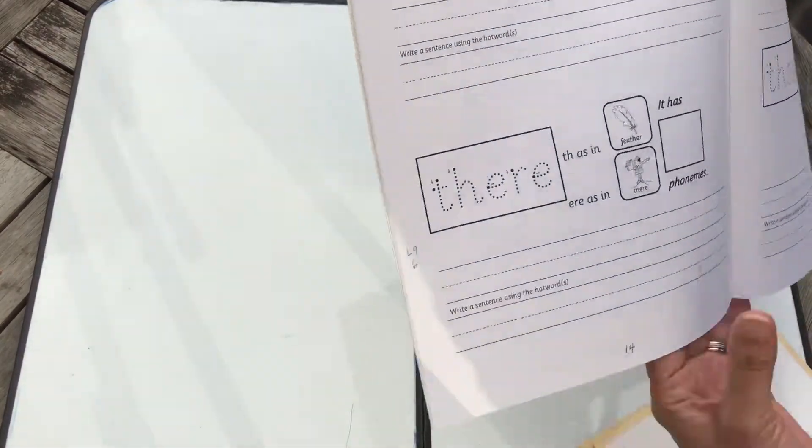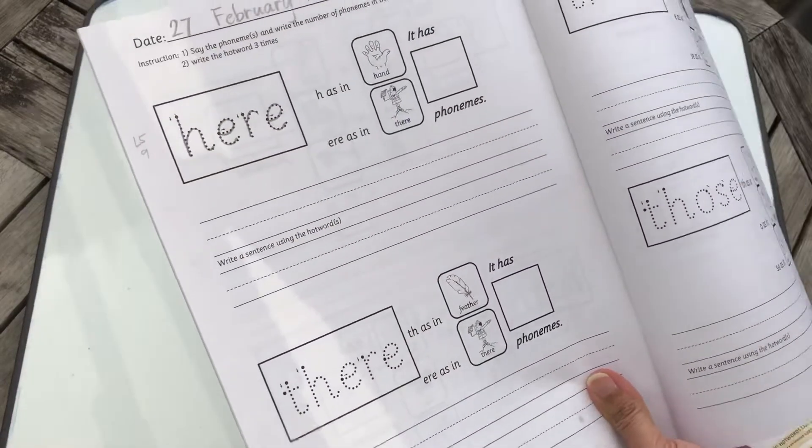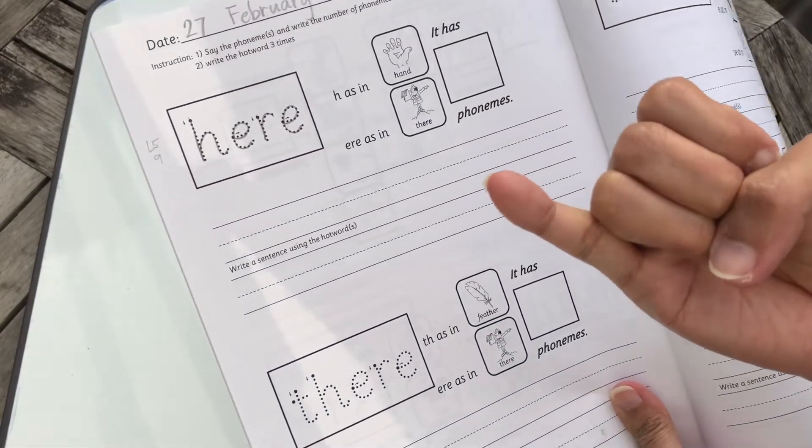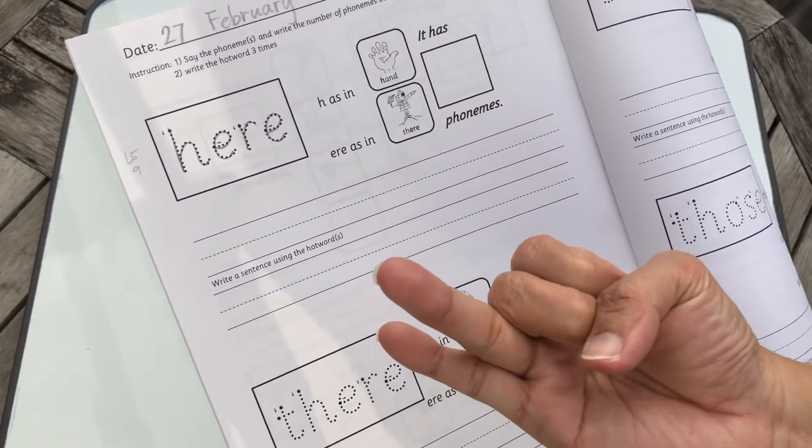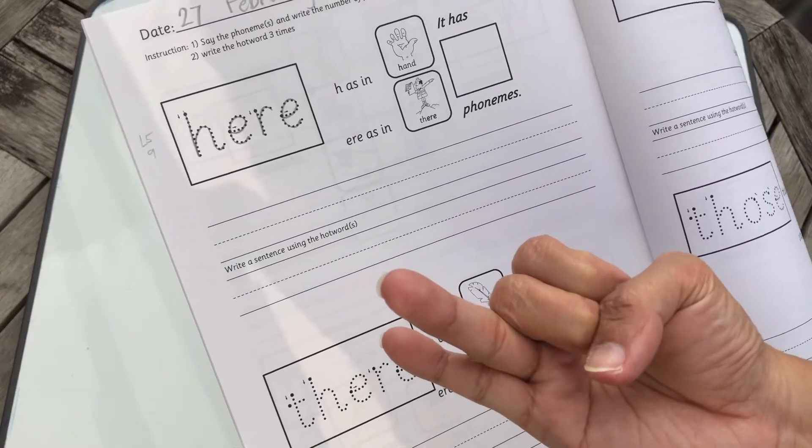How many phonemes do you hear? H as in hand, ere as in ear. Okay, so two. Here, there, okay.